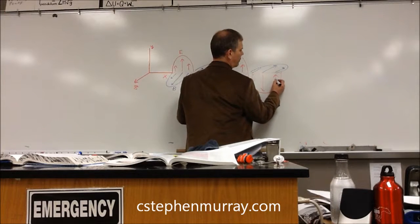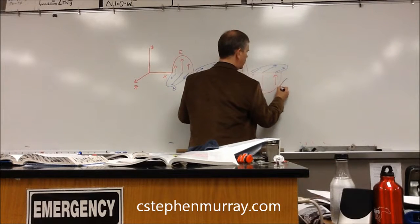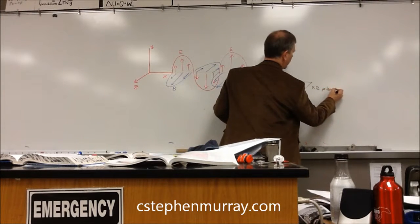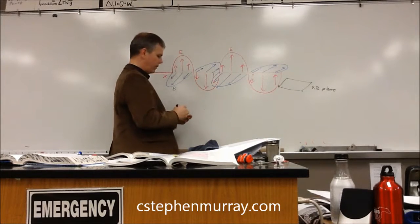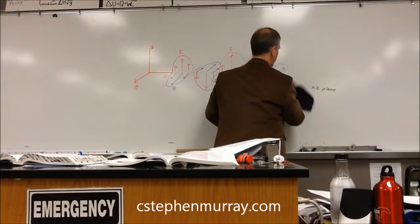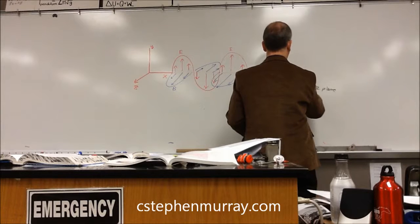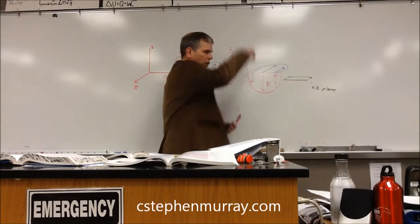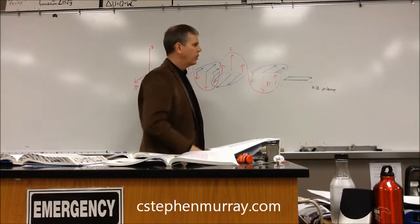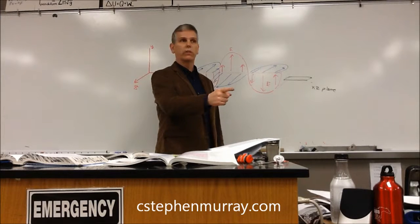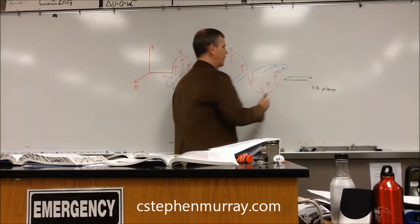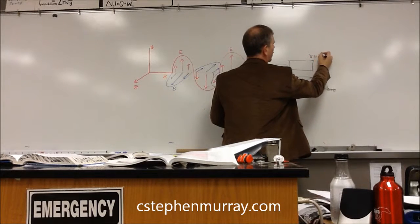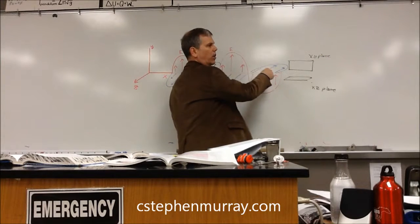So we're going to take a loop that comes in the XZ plane. And we're going to make another loop in the XY plane. In the XZ plane, you can see how the electric field is going to enter it — so the electric flux in that plane is going to increase. In the XY plane, the magnetic field is going to go in and out at that point.